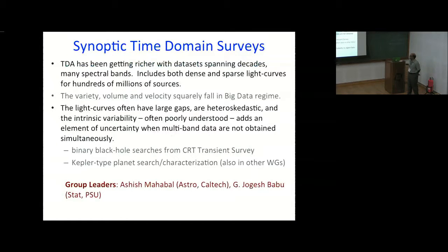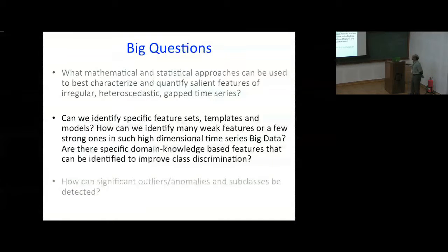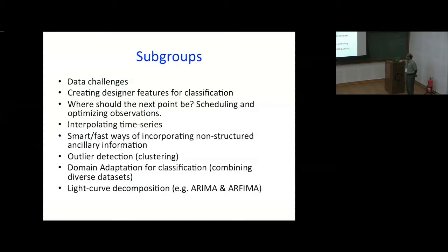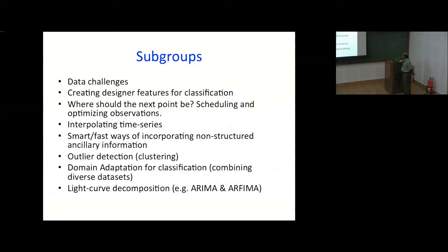Ashish already mentioned the subgroups we had: data challenges, interpolating time series, and importantly, domain adaptation for classification coming from diverse data sets. Riccardo Vilalta, a computer scientist, is leading this subgroup. There is also light curve decomposition using ARIMA and FARIMA models — I think Eric Feigelson is involved in that.